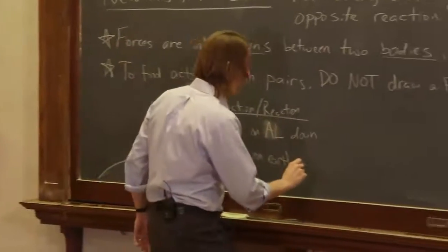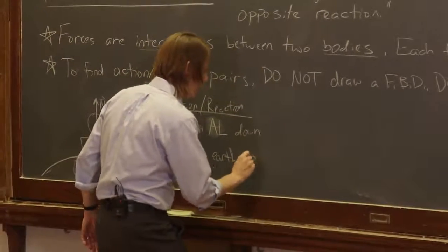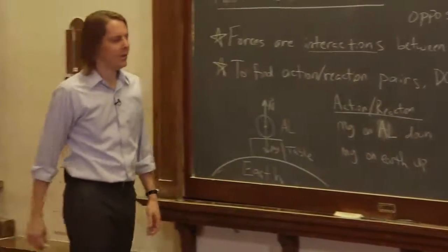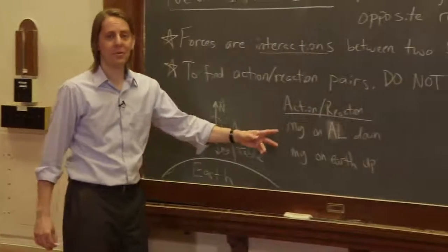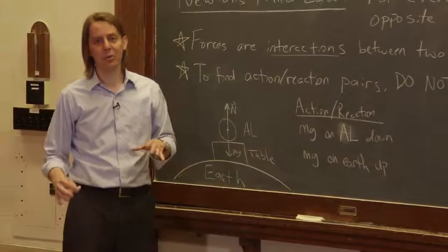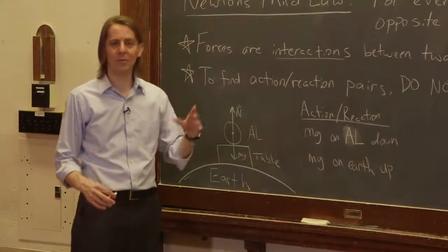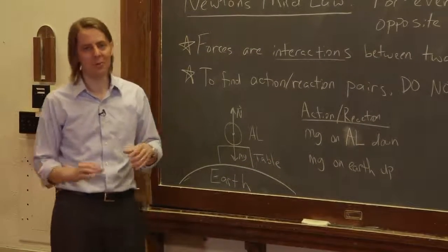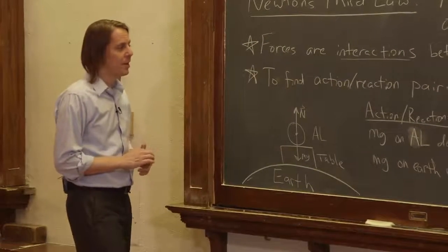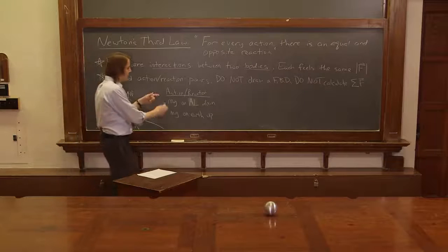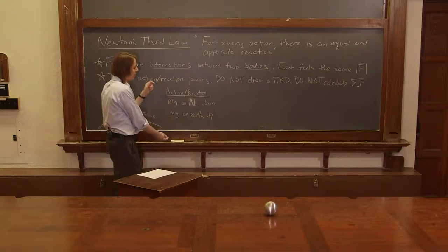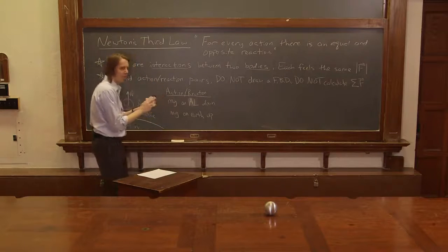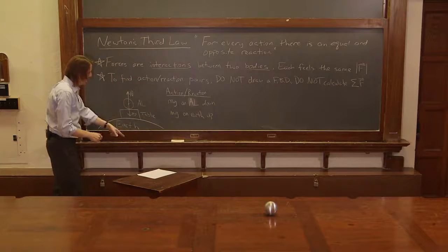The earth is feeling a force to accelerate towards Al. It's the same size force, but the acceleration is pretty small. If you take that force, a few newtons, and divide it by the mass of the earth, it's not moving very fast. But the force is there. That is the action-reaction pair: two forces, equal magnitudes, opposite directions, and two bodies - the earth and Al.